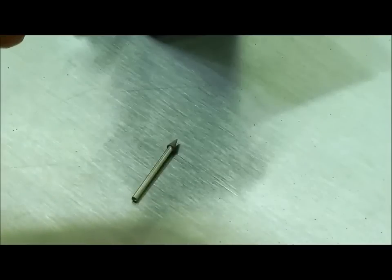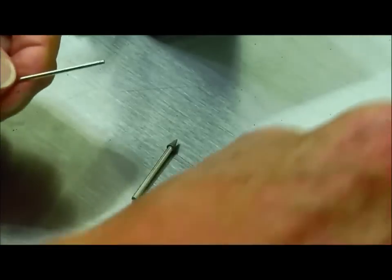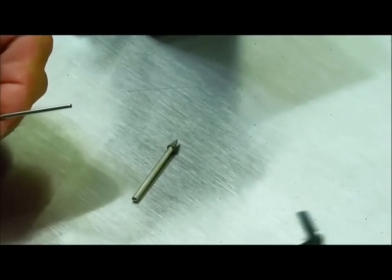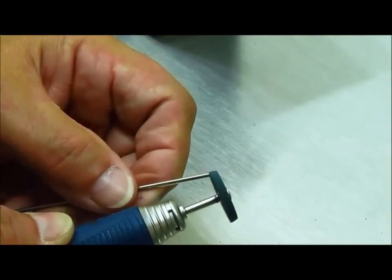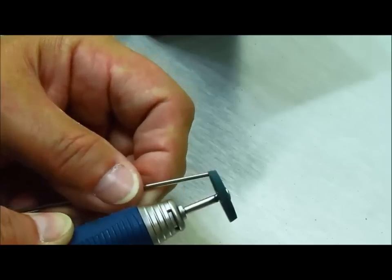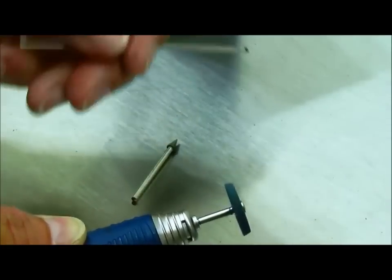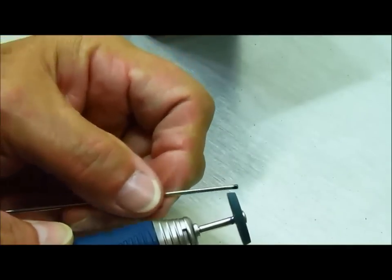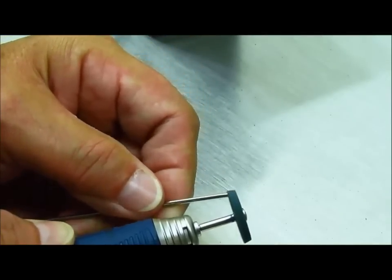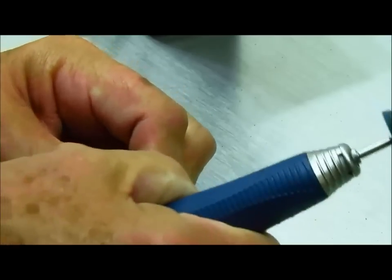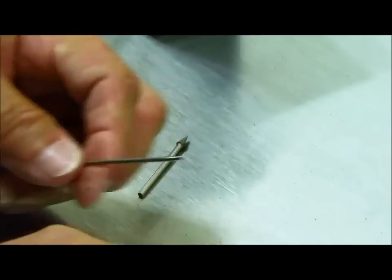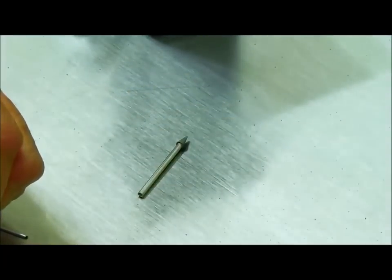Okay we've got our piece cut now let's deburr it where we can use it. Using a soft buffing wheel we'll clean the outside. We'll also take this time to clean up the Sharpie pen. That's got it where we can use the OD.